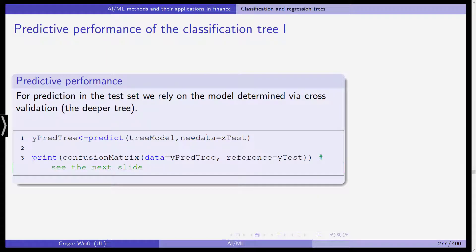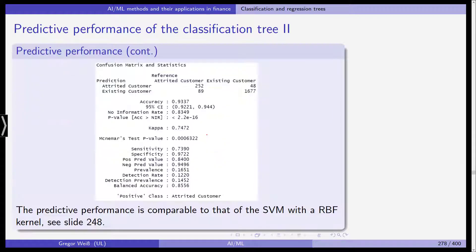What's the predictive performance of this classification tree? We rely on the model determined via cross-validation, which is the deeper tree. We don't use the shallow one with only two levels. We use predict and we print the confusion or error matrix based on the test data sample. This is what we get.